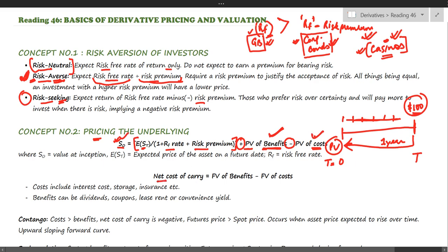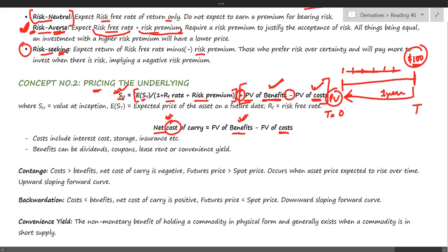There is a concept called net cost of carry, which is simply the benefits minus costs in the equation. Be very careful: although the name is 'cost of carry,' the equation is benefits minus cost, which means that if the figure is a positive value, it is actually a benefit and not a cost — but the term is still called net cost of carry.